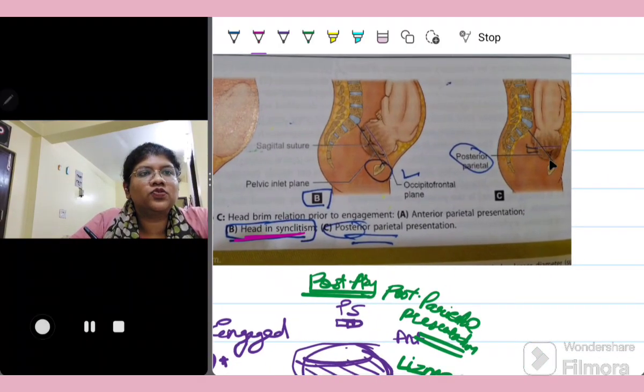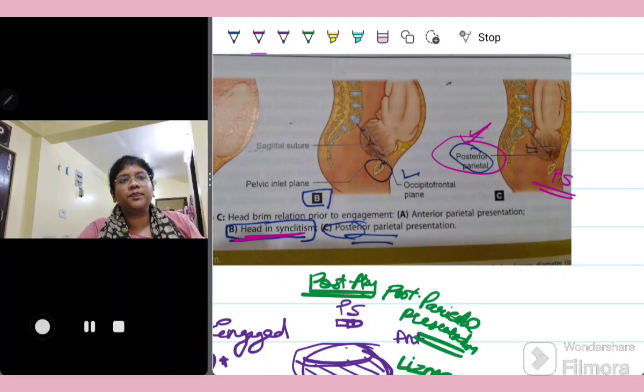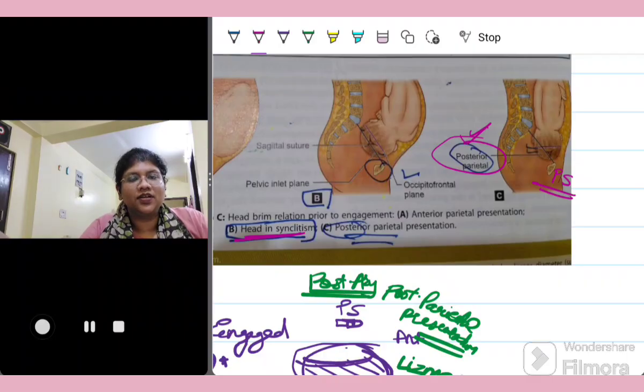Next, this is when the sagittal suture is lying more close to the pubic symphysis. So you can see that the sagittal suture is lying more close to the pubic symphysis. So the posterior parietal bone becomes prominent. So this is called as the posterior parietal presentation or the posterior asynclitism also known as Litzmann's obliquity.